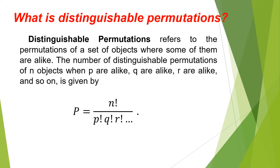What is Distinguishable Permutations? Distinguishable Permutations refers to the permutations of a set of objects where some of them are alike. The number of distinguishable permutations of n objects when p are alike, q are alike, r are alike, and so on,